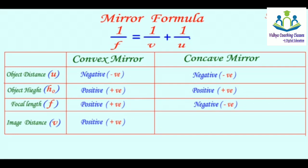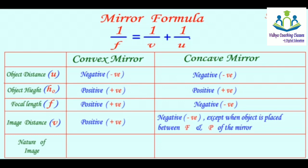And image distance in case of concave mirror would be negative, except when the object is placed between F and pole of the mirror.